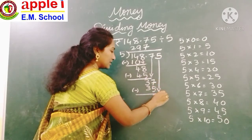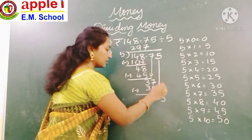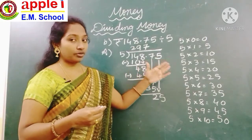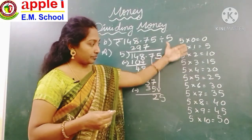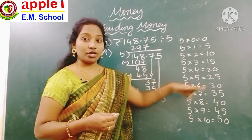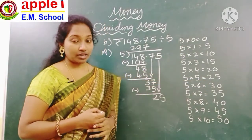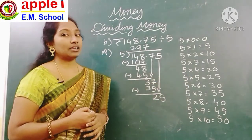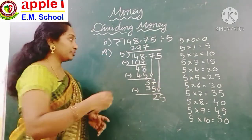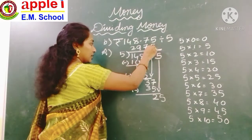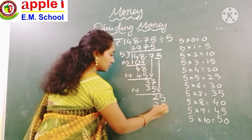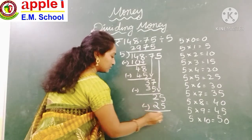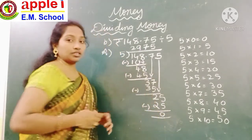Bring down the next digit: 5, making 25. Check whether 25 is in the 5 times table — yes! 5 fives are 25. Do the subtraction: 25 minus 25 is 0.